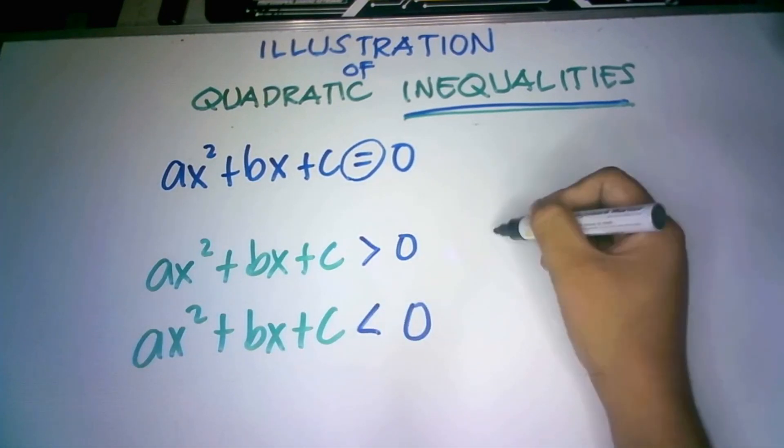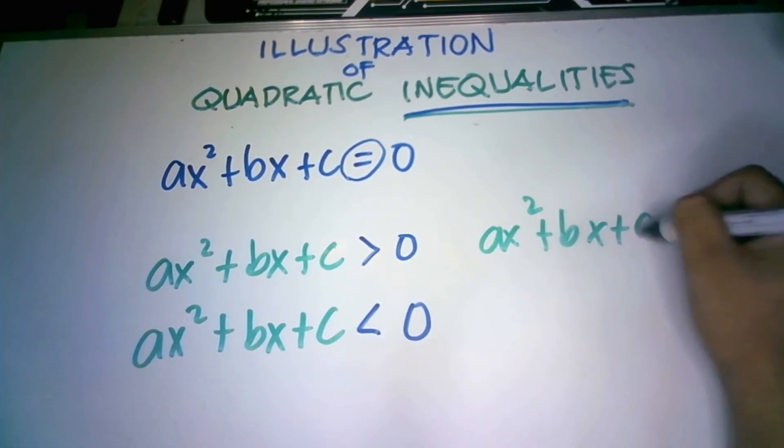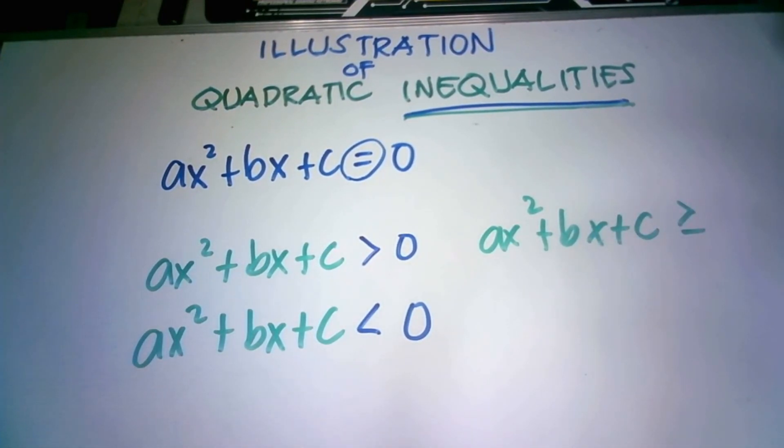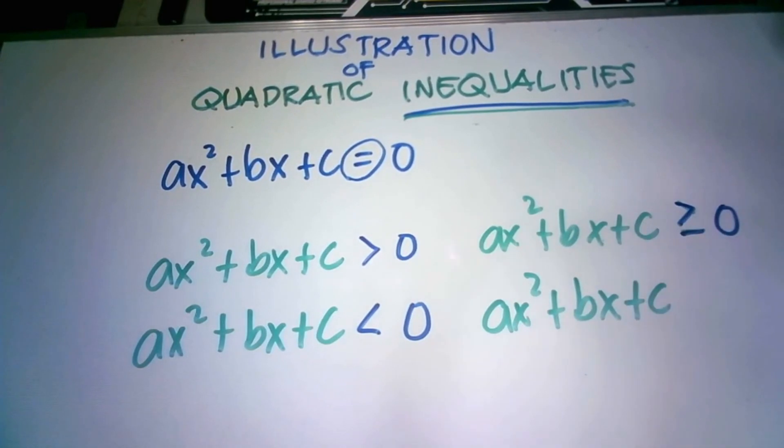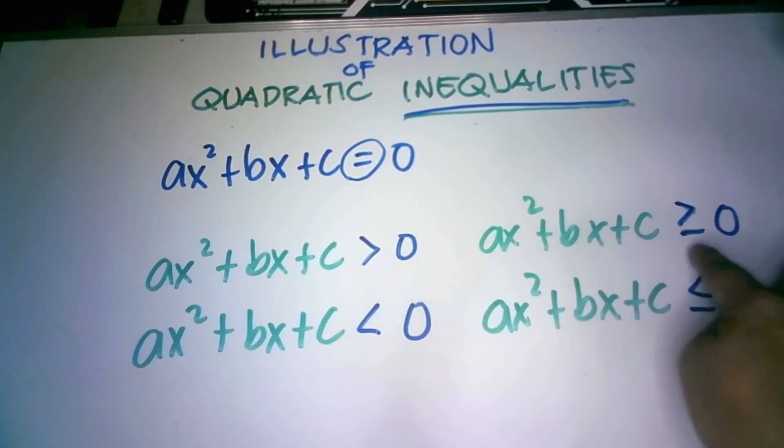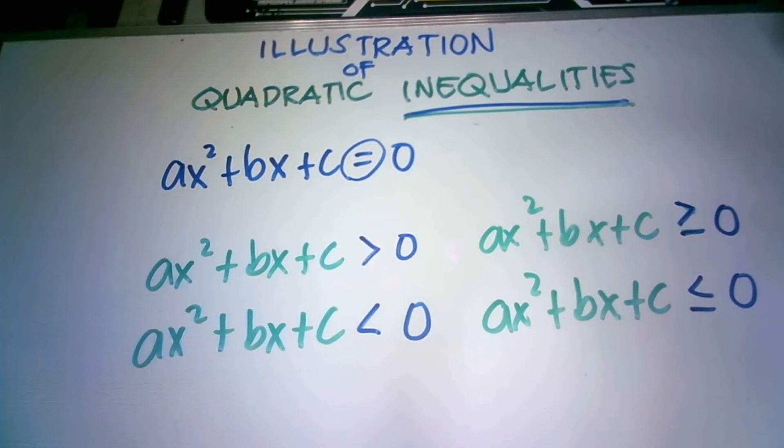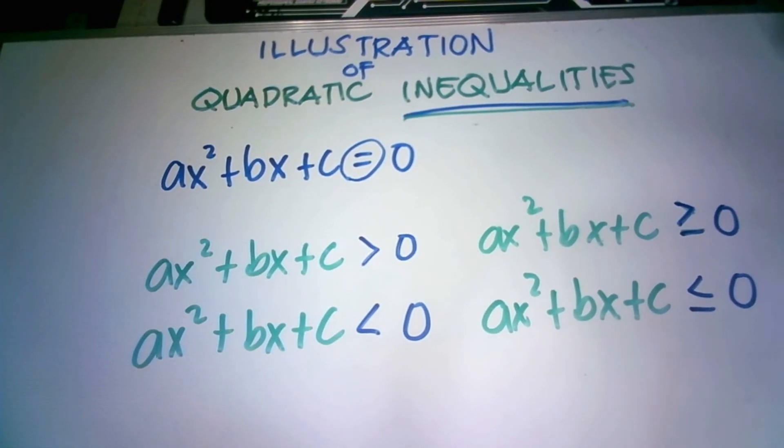Or, pwede po, ax squared plus bx plus c greater than or equal to zero. Pwede po din na, ax squared plus bx plus c less than or equals to zero. So, if you are going to look at this one, if you are going to compare the inequalities to the equation, ang ilang differential lang yun is ang inequality symbol. So, ana lang pag illustrate sa kitawag na ito quadratic inequalities. And then, the rest of the characteristics, almost the same lang. Nasa yung exponent nga to, nasa yung quadratic term, nasa yung linear term, nangpun siya constant term. So, ingana lang kasimple kung saan kitawag na ito quadratic inequalities.